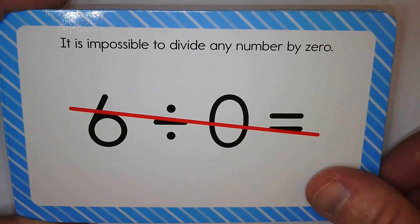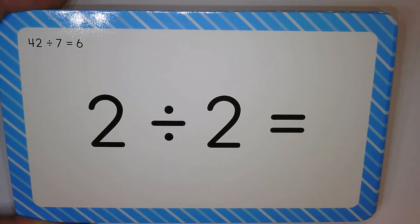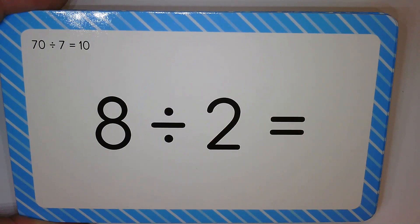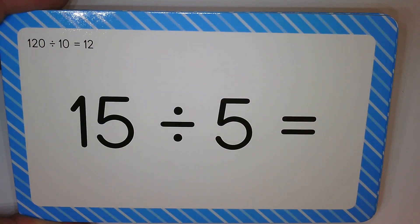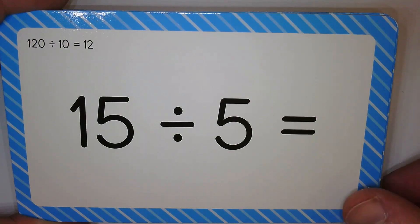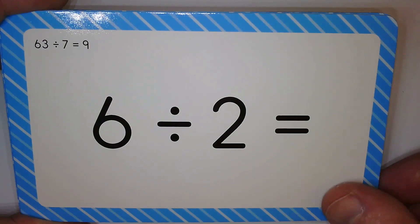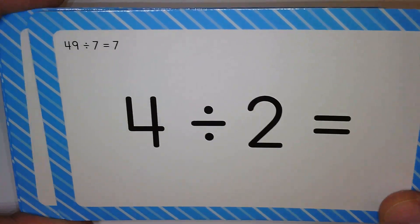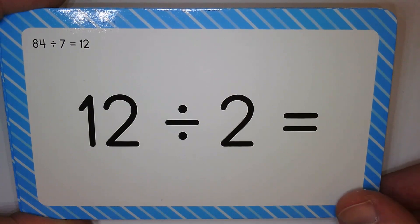Two divided by two is one. Four. Three. Three. Two. Six.